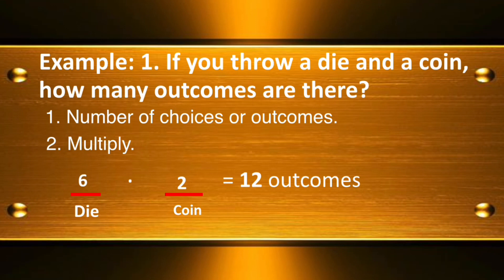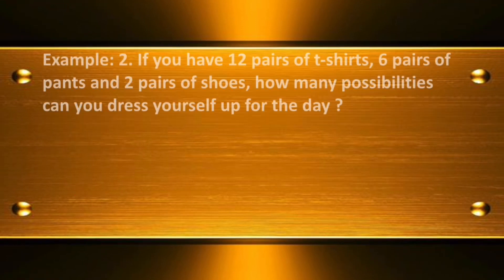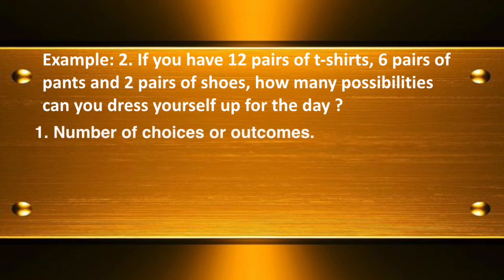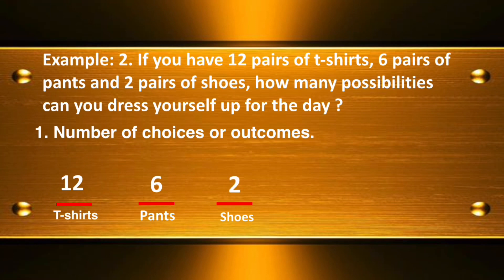Example 2: If you have 12 pairs of t-shirts, 6 pairs of pants, and 2 pairs of shoes, how many possibilities can you dress yourself up for the day? Identify the choices: t-shirts — 12, pants — 6, shoes — 2. Using the Fundamental Counting Principle, multiply: 12 times 6 times 2 equals 144 outcomes.